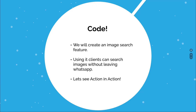All this might be sounding very abstract and difficult, but once we look into an example, you will understand how to use Action much better. So today we will be making an image search feature inside WhatsApp itself. The client will just need to search for an image using a command, and the bot will search for that query on the web and return an image, then automatically upload it to WhatsApp. So let's see action in action.